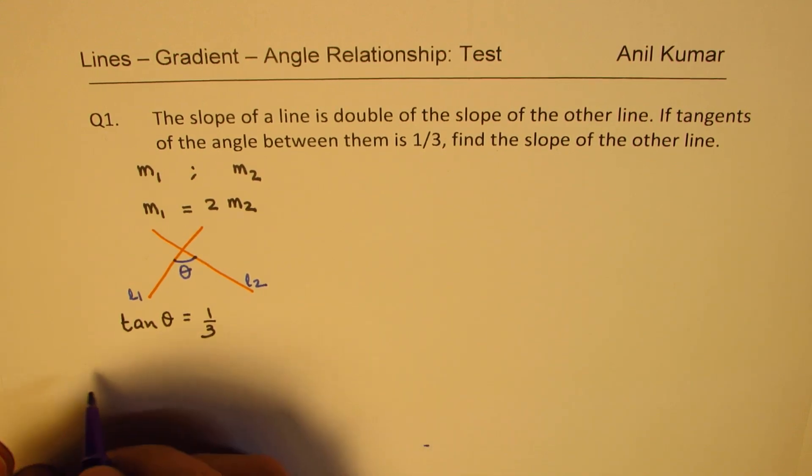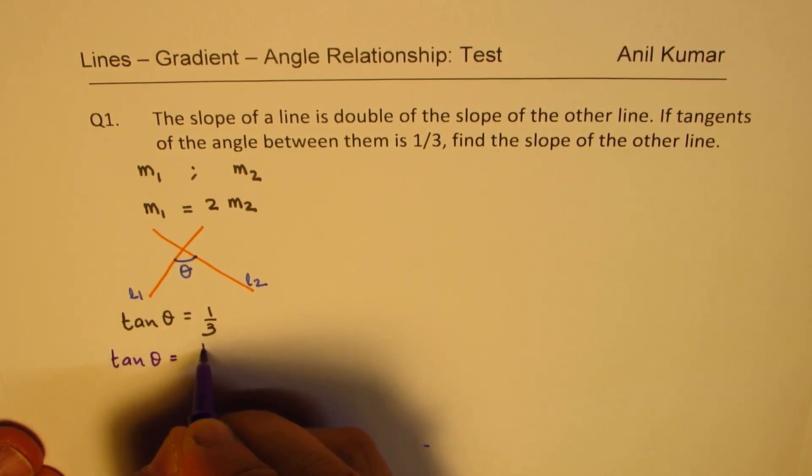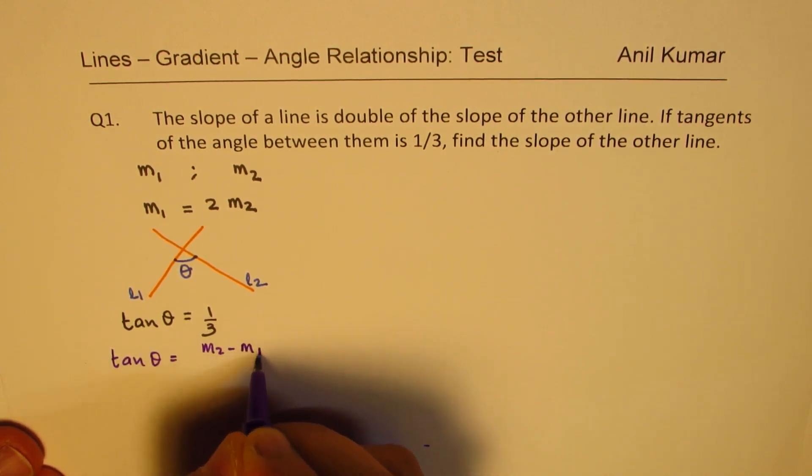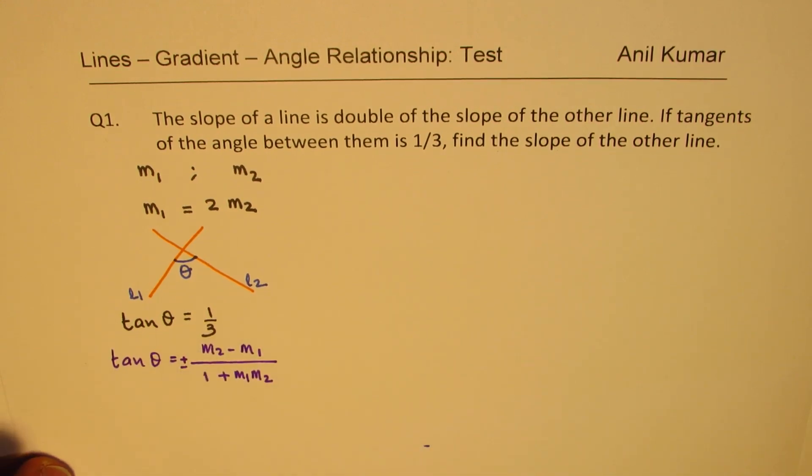You remember? The formula is that tan theta is equal to m2 minus m1 over 1 plus m1 m2, right? And the sign could be plus or minus.